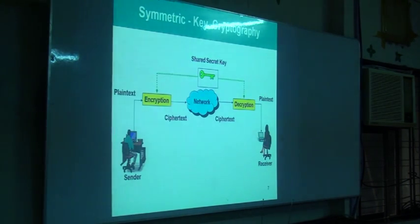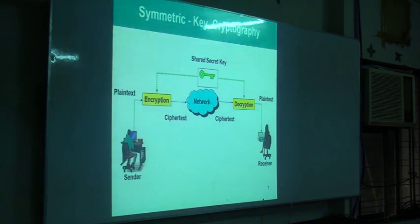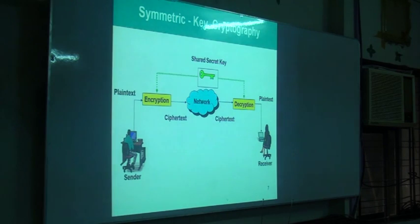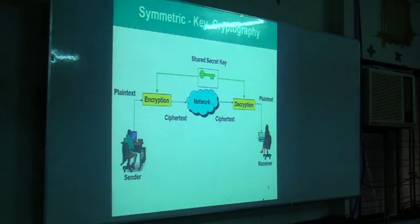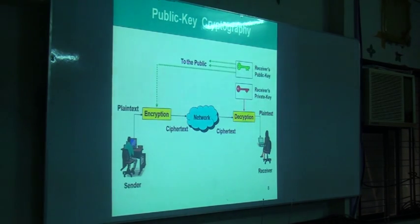In symmetric cryptography, both the transaction entities — sender and receiver — must share the same secret key. One key is associated with both the encryption and decryption process. A sender transforms the message from plaintext to ciphertext with the key, which is securely shared with the recipient, and that same key is used to decrypt the messages. This is called symmetric because only one key is involved.